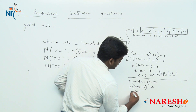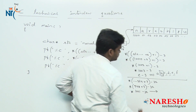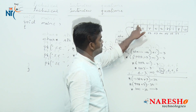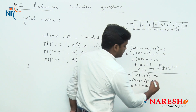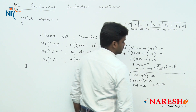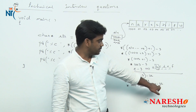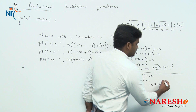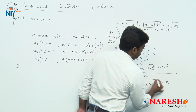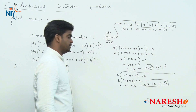So 1001 is the pointer. Pointer to 1001 is the character 'a'. We know that the ASCII value of small 'a' minus 32 gives the ASCII value of capital 'A'. So the second expression result is capital 'A'.